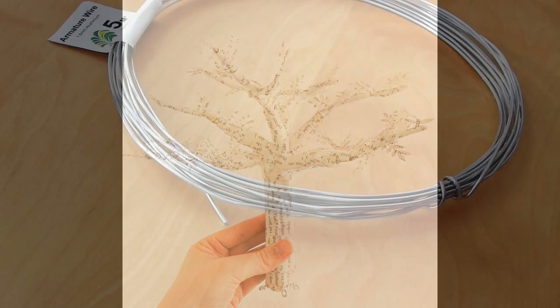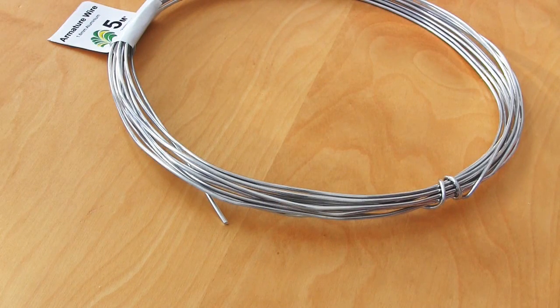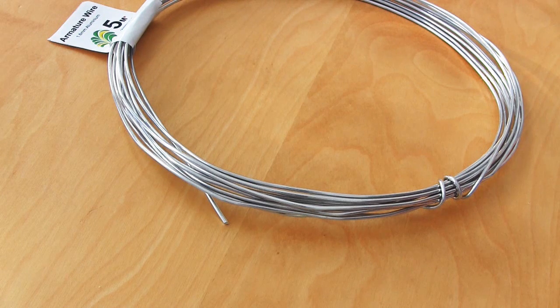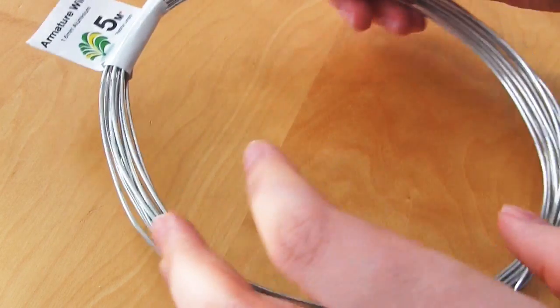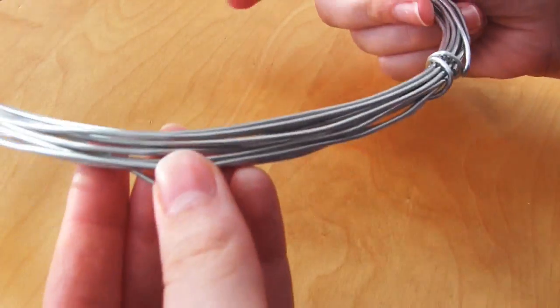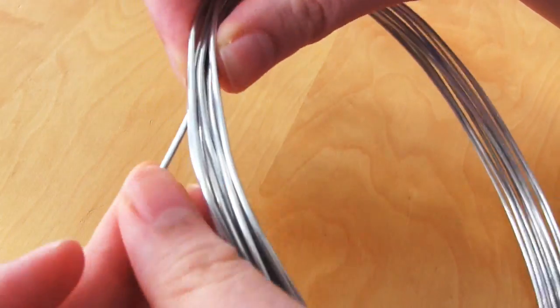Some wire. The wire I use for this project is armature wire or just aluminum wire which is 1.6mm in diameter. The reason I chose aluminum wire is because it's really easy to shape and you can shape it with just your hands.